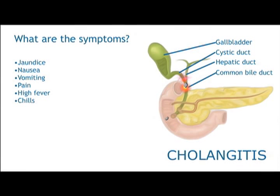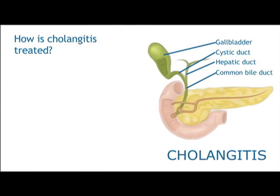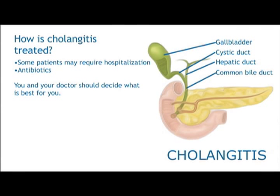Cholangitis less commonly results from other conditions such as cancer. Patients with cholangitis are usually admitted to the hospital and then started on antibiotics. These help to relieve any infection within the bile ducts or the blood. Stones lodged in the bile ducts can then be removed during ERCP.